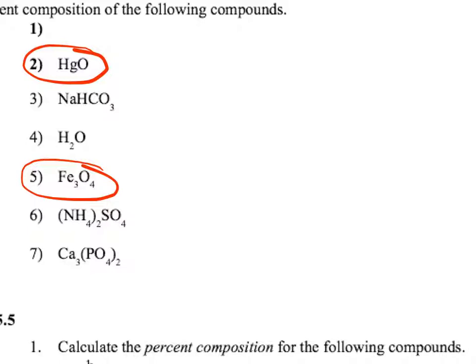We're doing percent composition here. The other way to say this is percent by mass and the first thing that we need to do is find the molar mass of each of those two elements. We've got Hg or mercury which has a molar mass of 200.59 grams per mole and we've got oxygen which has a molar mass of 16 grams per mole.